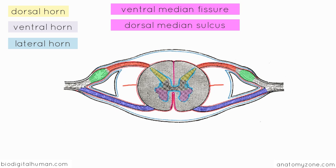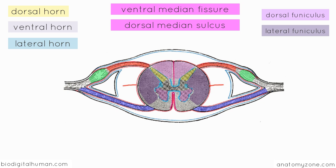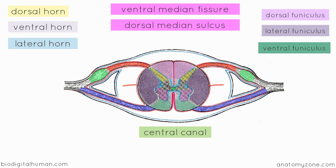The white matter, which lies outside the grey matter, can be broken into three regions in relation to these fissures, sulci, and horns. Between the dorsal median sulcus and the dorsal horn, you've got the dorsal funiculus. Between the dorsal horn and the ventral horn, you've got the lateral funiculus. And ventrally, you've got the ventral funiculus between the ventral median fissure and the ventral root. Right in the centre of the spinal cord there's a central canal, which is continuous at the top with the ventricular system of the brain, and carries cerebrospinal fluid.